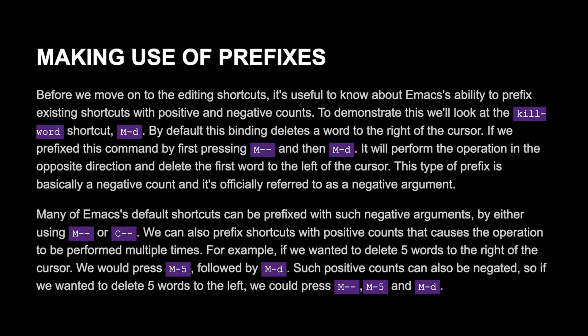Making use of prefixes. Before we move on to the editing shortcuts, it's useful to know about Emacs's ability to prefix existing shortcuts with positive and negative counts. To demonstrate this, we'll look at the kill-word shortcut Meta+D. By default this binding deletes a word to the right of the cursor. If we prefix this command by first pressing Meta+- and then Meta+D, it will perform the operation in the opposite direction and delete the first word to the left of the cursor. This type of prefix is a negative count, officially referred to as a negative argument. Many of Emacs's default shortcuts can be prefixed with negative arguments by using Meta+- or Ctrl+-.